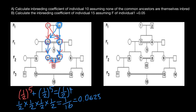The decimal number is 0.0625. If you need the answer in percent form, we just multiply by 100, moving the decimal point two places to the right. So the inbreeding of individual 10 is 6.25%. We can also express it as 0.0625 — but without the percent sign — since that value is on a scale of zero to one, while 6.25% is on a scale of zero to 100%.